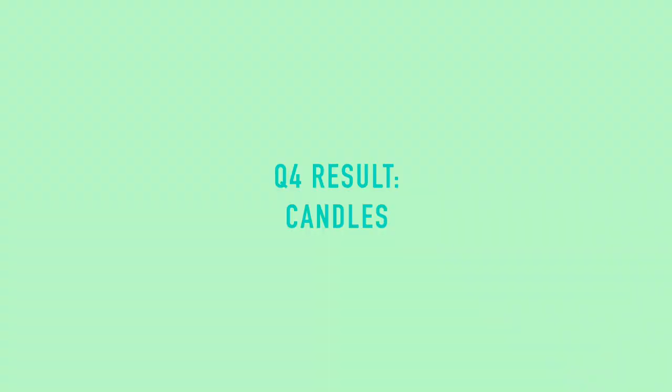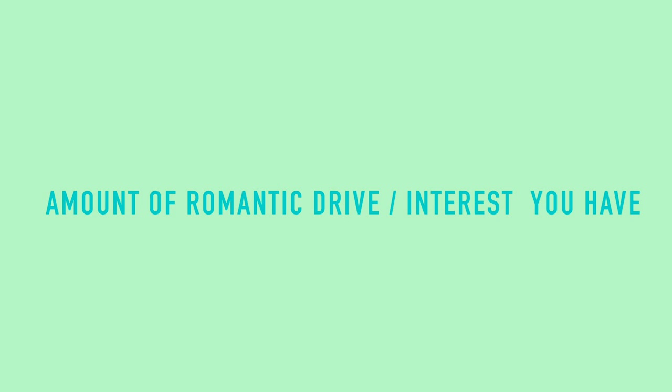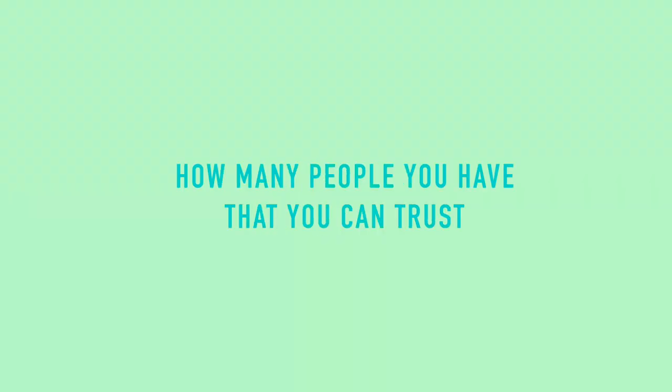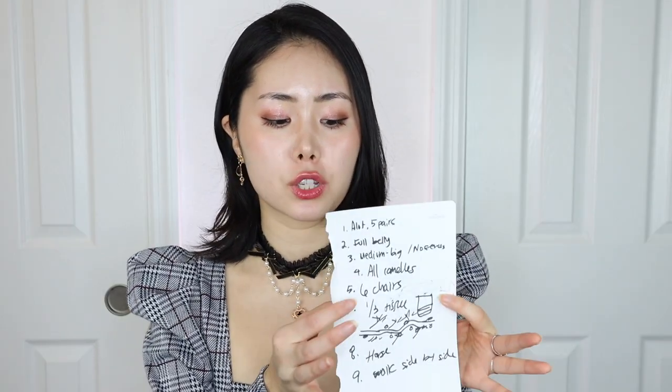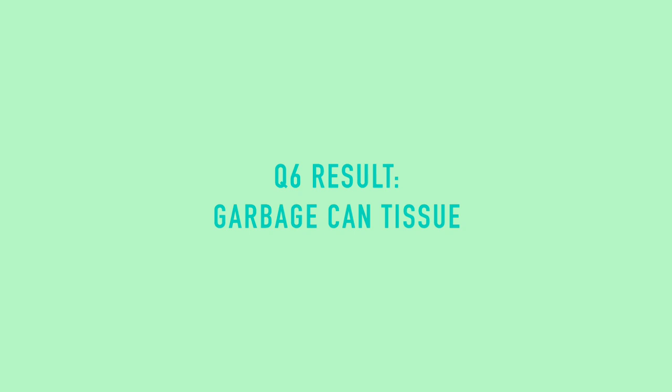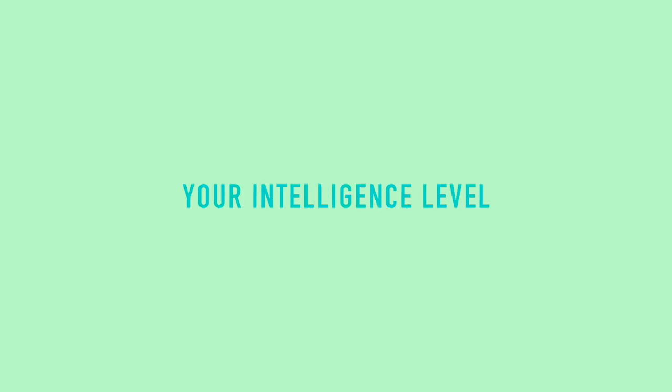The candles show the amount of interest you have in a romantic partner — I lit all the candles, so who knows what that means! The chairs around the table show how many people in your life you trust right now. I put six chairs, meaning six trusted people — including family and friends. It's not a big group but it's not just one either, which feels pretty accurate.